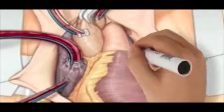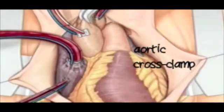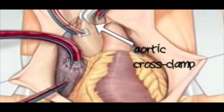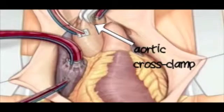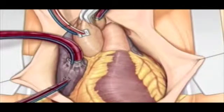The aorta is cross-clamped to maintain a bloodless field and to allow the bypasses to be connected to the aorta. In addition, the aortic cross-clamp allows the perfusionist to deliver cardioplegia, which is a cooled potassium mixture that causes the heart to stop. The cross-clamp prevents the solution from entering systemic circulation.